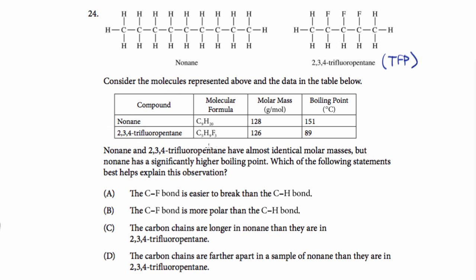And we have this data in the table. So nonane and 2,3,4-trifluoropentane have almost identical molar masses - 128 versus 126 grams per mole - but nonane has a significantly higher boiling point.